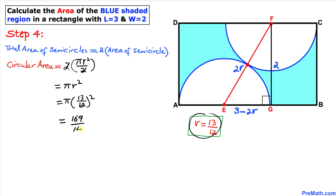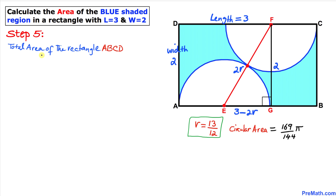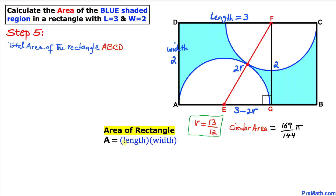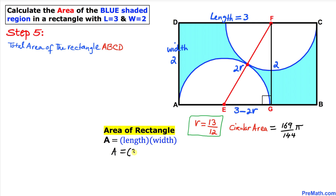Now we calculate the area of the big rectangle ABCD. Using area = length × width, with length 3 and width 2, the rectangular area equals 3 × 2 = 6 square units.